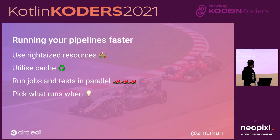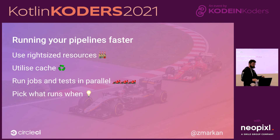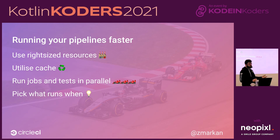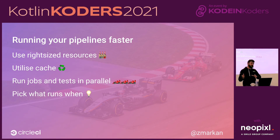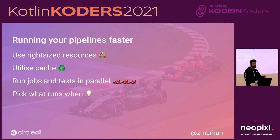Lastly, you can pick what runs when. If you have an application with a very extensive integration test suite, you can choose not to run that on every single commit, but only on merge to the main branch or nightly. For a multi-platform application, if you've only touched the Android part and not the iOS part, you don't have to recompile the iOS bit. You can configure CI/CD to handle those cases. I have examples for most of these things — happy to talk about this further.